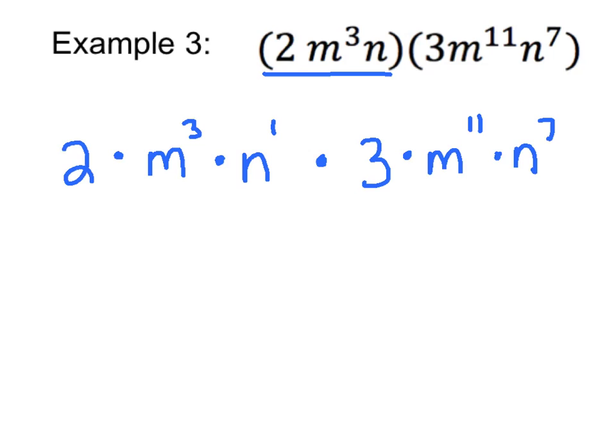When I'm doing a problem like this, I like to multiply the things together that are alike. In other words, 2 is a whole number. So is 3. I'm going to multiply those two things together right now. 2 times 3 is 6.